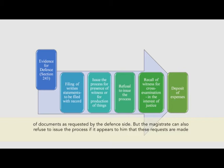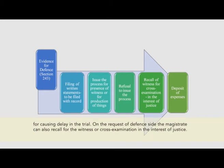The magistrate can also refuse to issue the process if it appears to him that these requests are made for causing delay in the trial. On the request of the defense side, the magistrate can also recall a witness for cross-examination in the interest of justice, but the defense side can be asked to make a deposit for the expenses to be incurred by the witnesses in the recall.